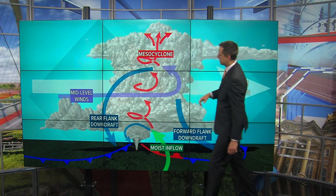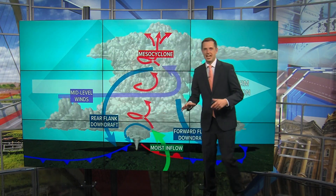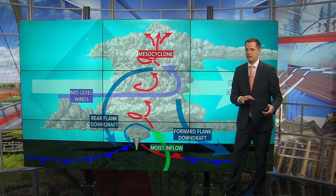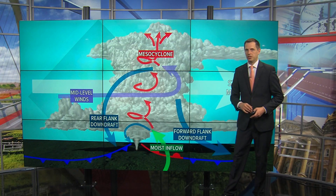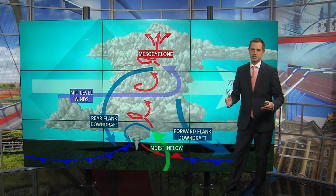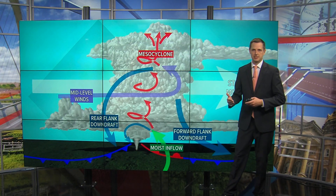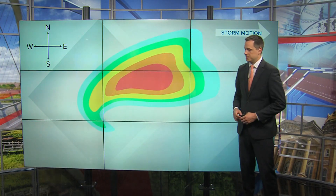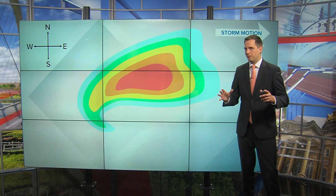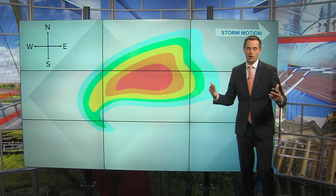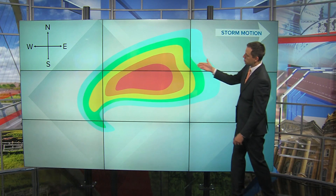On the backside of this storm is what's called the rear flank downdraft, which tends to be on the drier side of things, but it actually plays a key role in tornado development. There are a bunch of different mechanisms associated with tornado development, but it's all very complex and very specific to supercells.